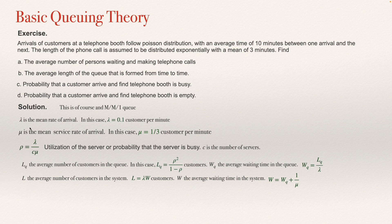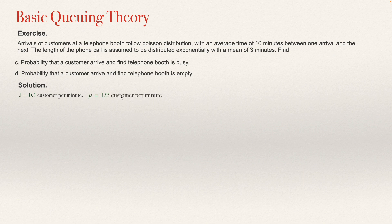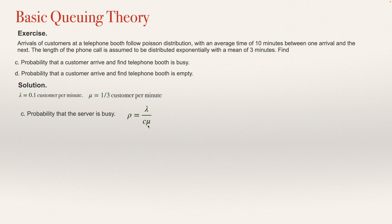Let's solve question C first. We know lambda equals 0.1 customers per minute, and mu equals 1/3 customers per minute. Using the formula rho equals lambda over C·mu, with C equals 1, we get rho equals 0.1 divided by (1/3), which equals 0.3. So we have the answer to question C: the probability the booth is busy is 0.3.